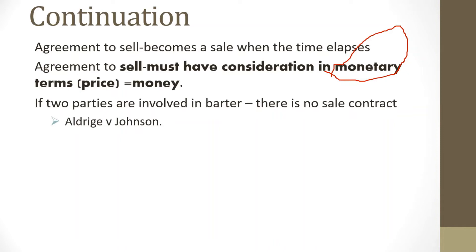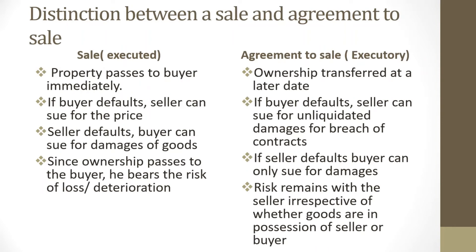For example, if I buy a car at 10 million and later sell it at 100,000, that consideration of 100,000 is sufficient for the transaction to be considered a sale of goods contract, because money is in the picture. It does not matter that the price has been reduced from 10 million to 100,000.